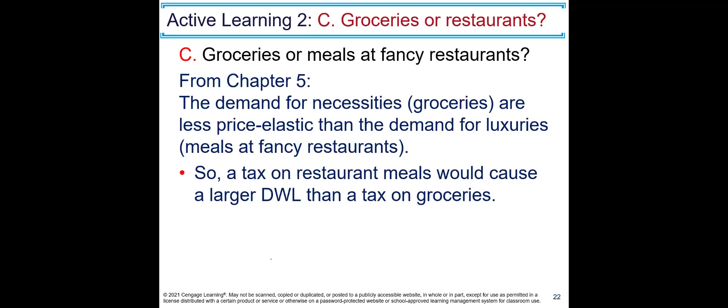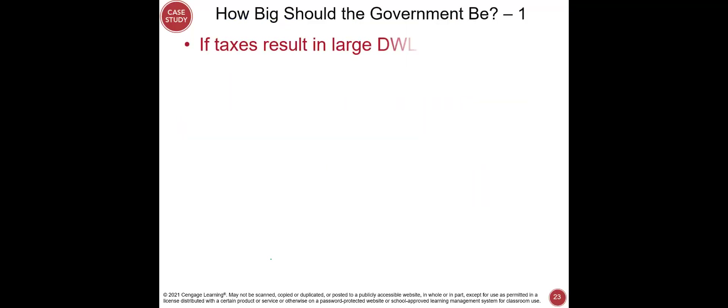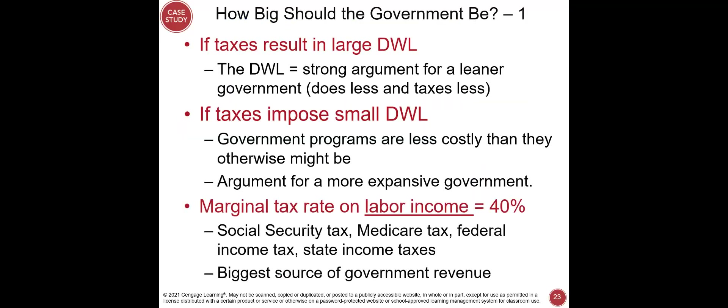Third: groceries versus meals at fancy restaurants. Demand for necessities like groceries is less price elastic than demand for luxuries like restaurant meals. So a tax on restaurant meals would cause a larger deadweight loss than a tax on groceries. This brings us to the question: how big should the government be? If taxes result in large deadweight loss, that is a strong argument for a leaner government that does less and taxes less.